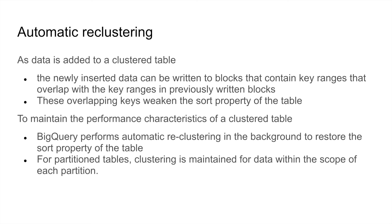In this video, we have seen partitioning and clustering, learned about when to use clustering over partitioning or partitioning over clustering, the different criteria for choosing between them, and what automatic clustering is. This is a good point to think about partitioning and clustering based on the taxi dataset. Take a minute to think about different partitioning and clustering columns, and share your use case and column choices in the comment section.